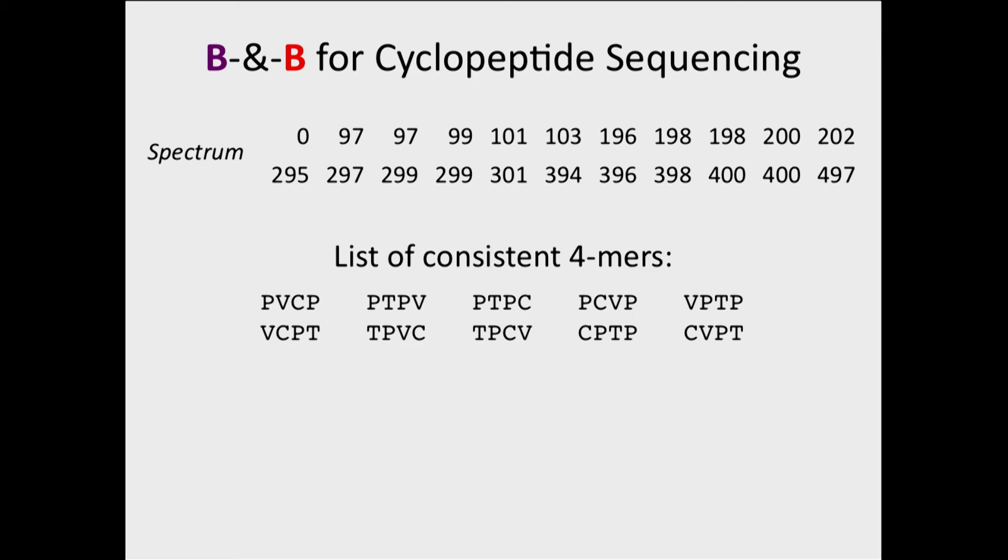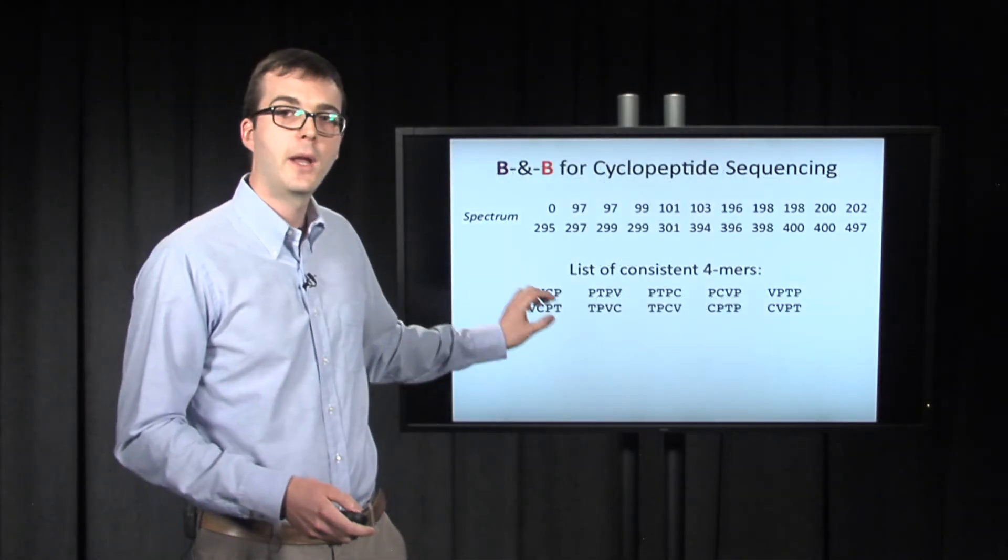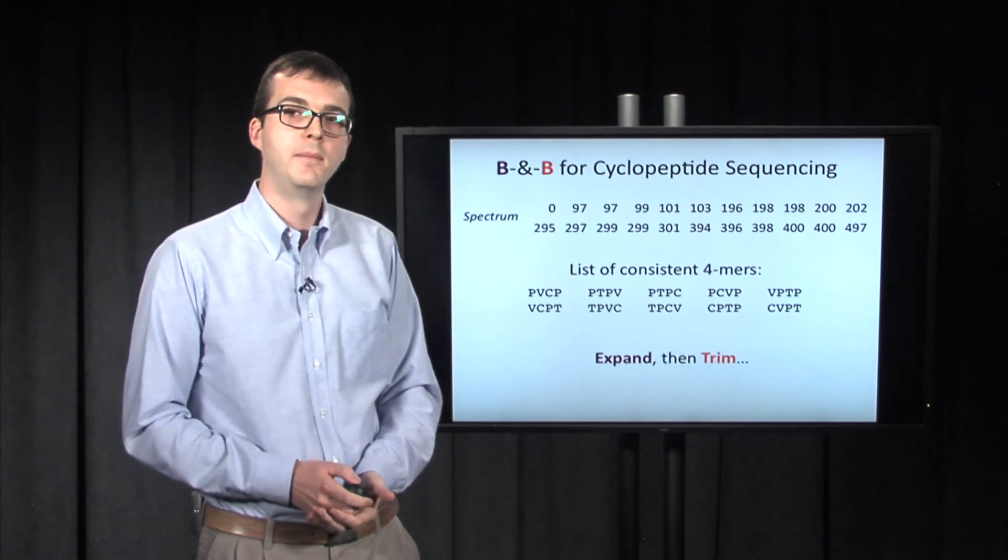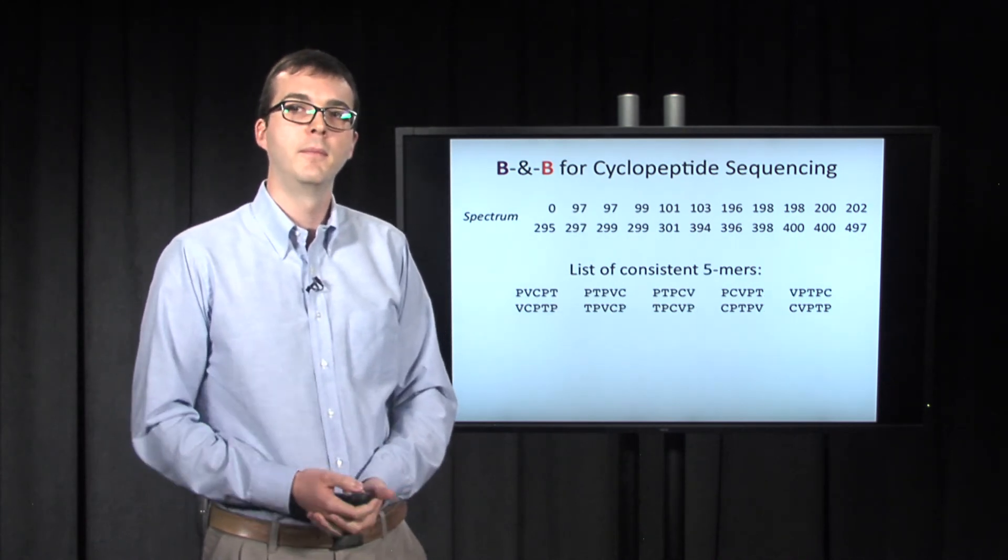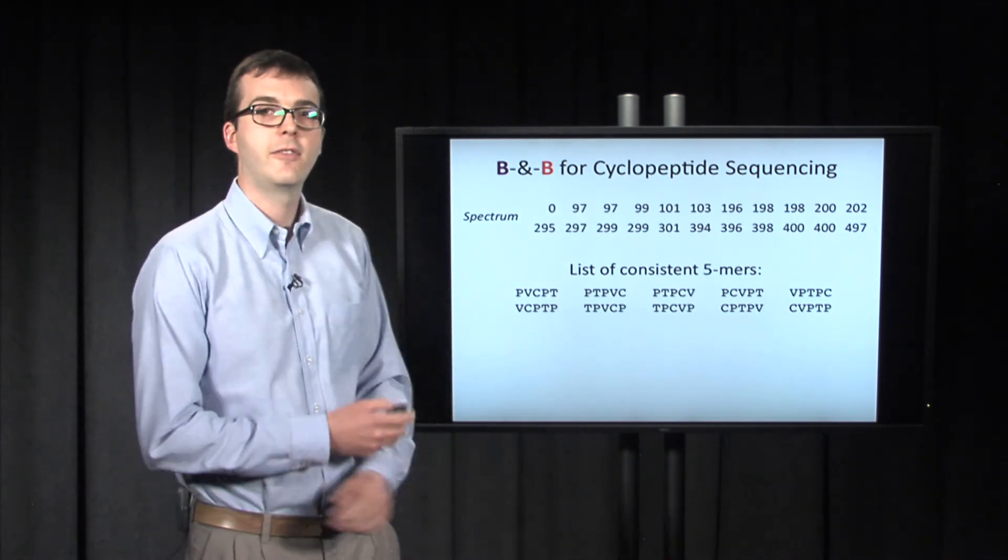So we go from 15, and do 15 times 18, so we get 270, and then we find which of those 270 4-mers are consistent with the spectrum, and we're down to 10. We do it one more time, expand, and then trim, and we're left with 10 consistent 5-mers.